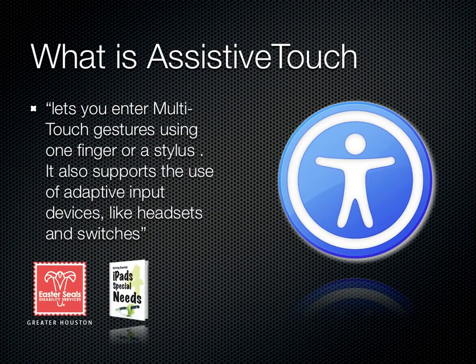Apple says Assistive Touch lets you enter multi-touch gestures using one finger or stylus. It also supports the use of adaptive input devices like headsets and switches. You can think of Assistive Touch as a way of interfacing with the iPad when the normal keys or buttons won't work for you. You can also use Assistive Touch to shortcut through the use of compound gestures the process of navigating the iPad.